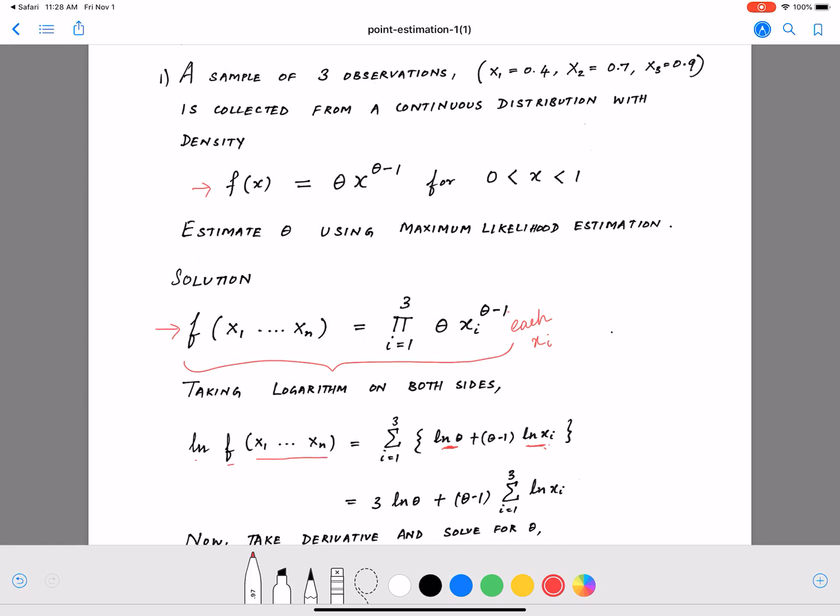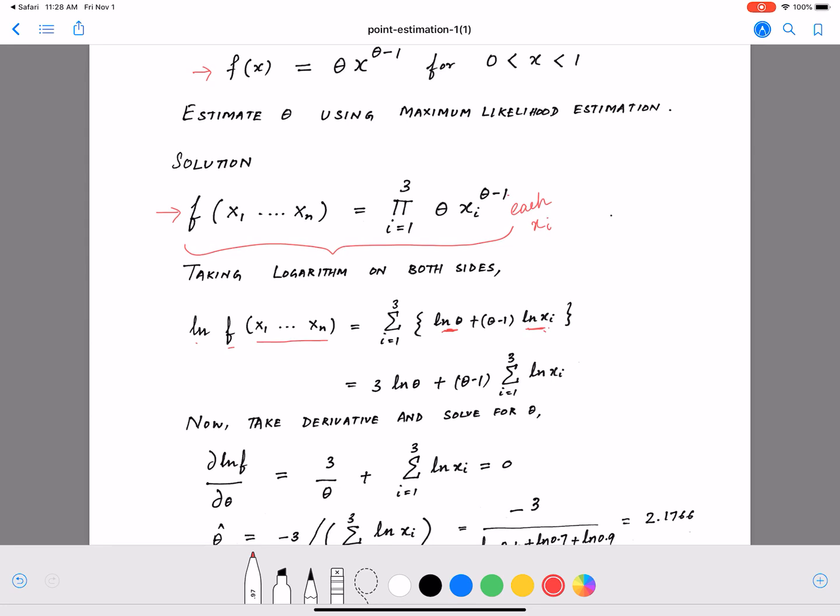The rest of the procedure is the same. Once we have a functional form, after simplification we get something like this. Notice there isn't any x here, so the sigma just reduces to 3, because it is ln theta times 1. It is nothing but sigma i equals 1 to 3, 1 times ln theta, and this reduces to 3 after summation. Then you have xi here, so the sigma goes inside theta minus 1, which is why we get 3 ln theta plus theta minus 1 sigma i equals 1 to 3 ln xi.